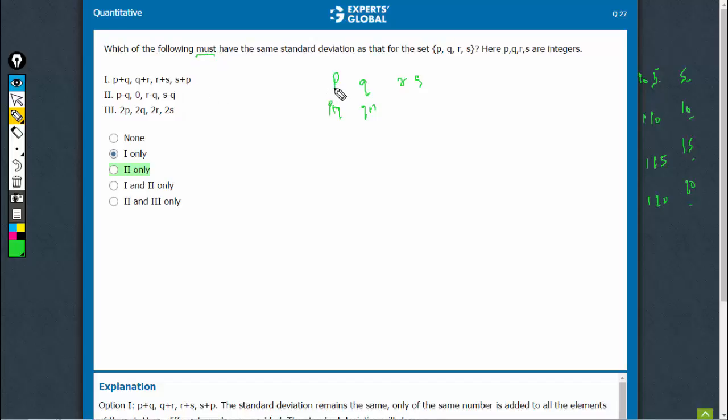The standard deviation would be maybe the same if P, Q, R, S are equal or something like that. But yes, we cannot say this. Coming off of some peculiar combination of values, it may be same, but definitely, in most cases, it will not be the same. The standard deviation would change.